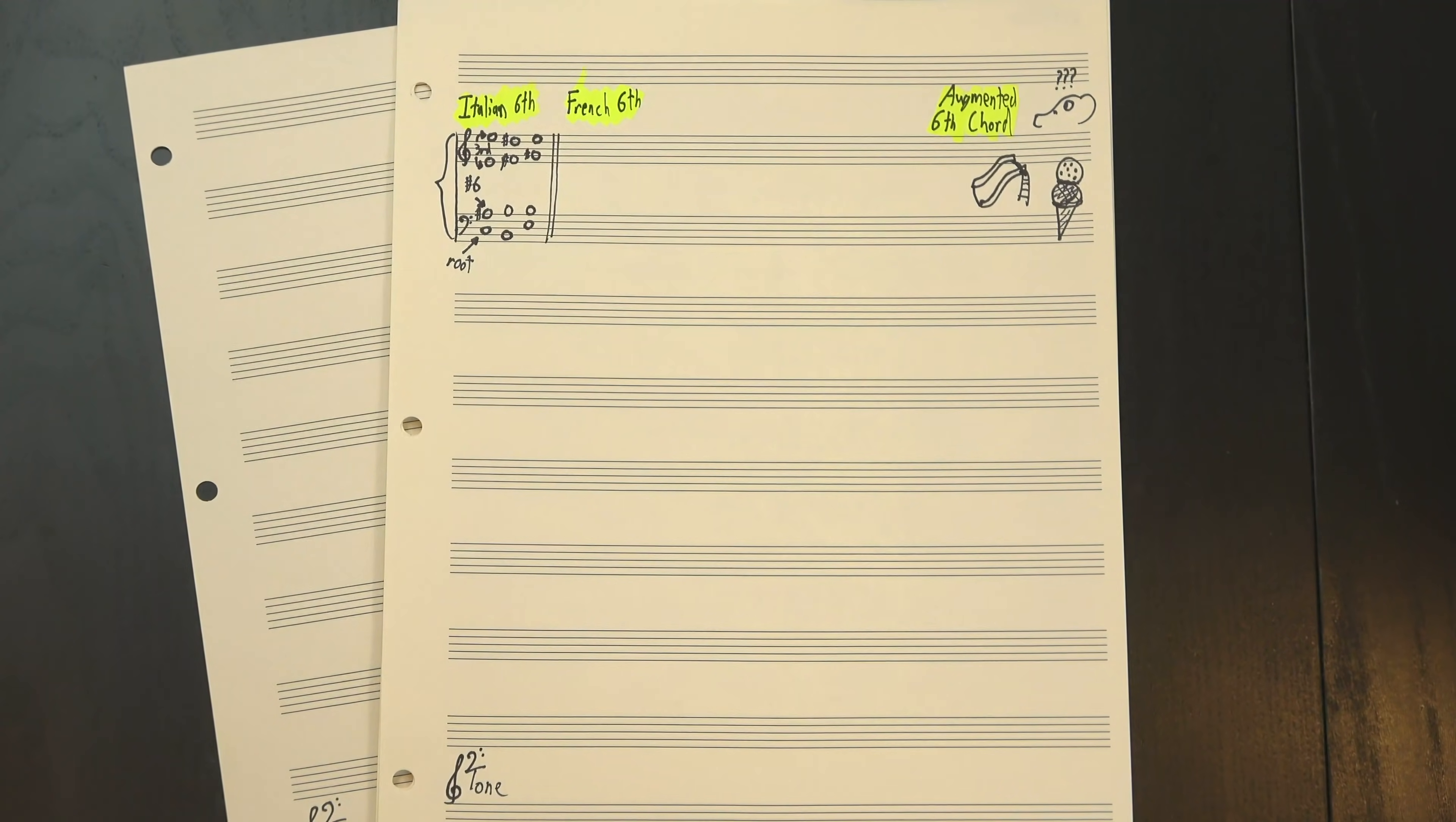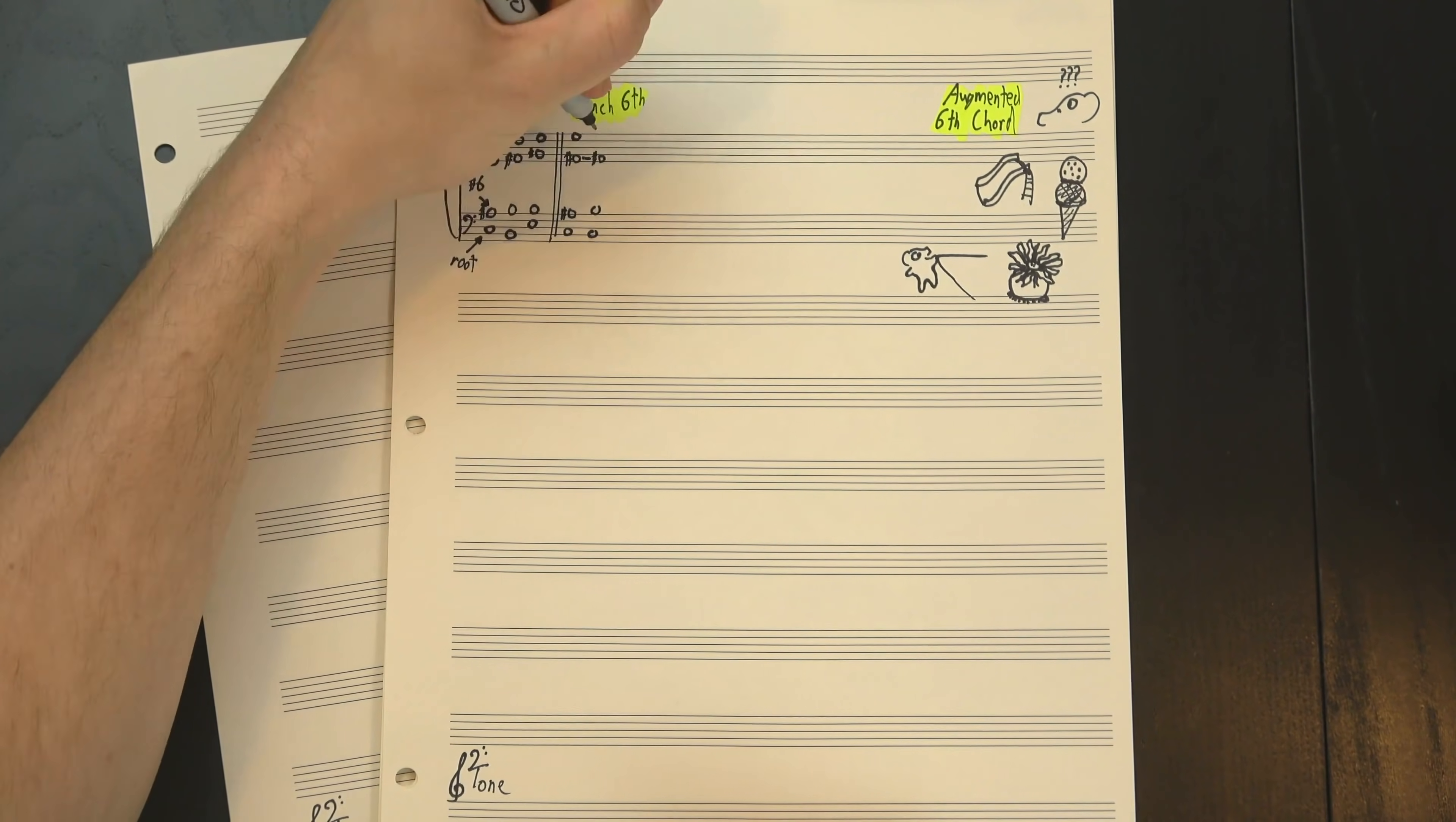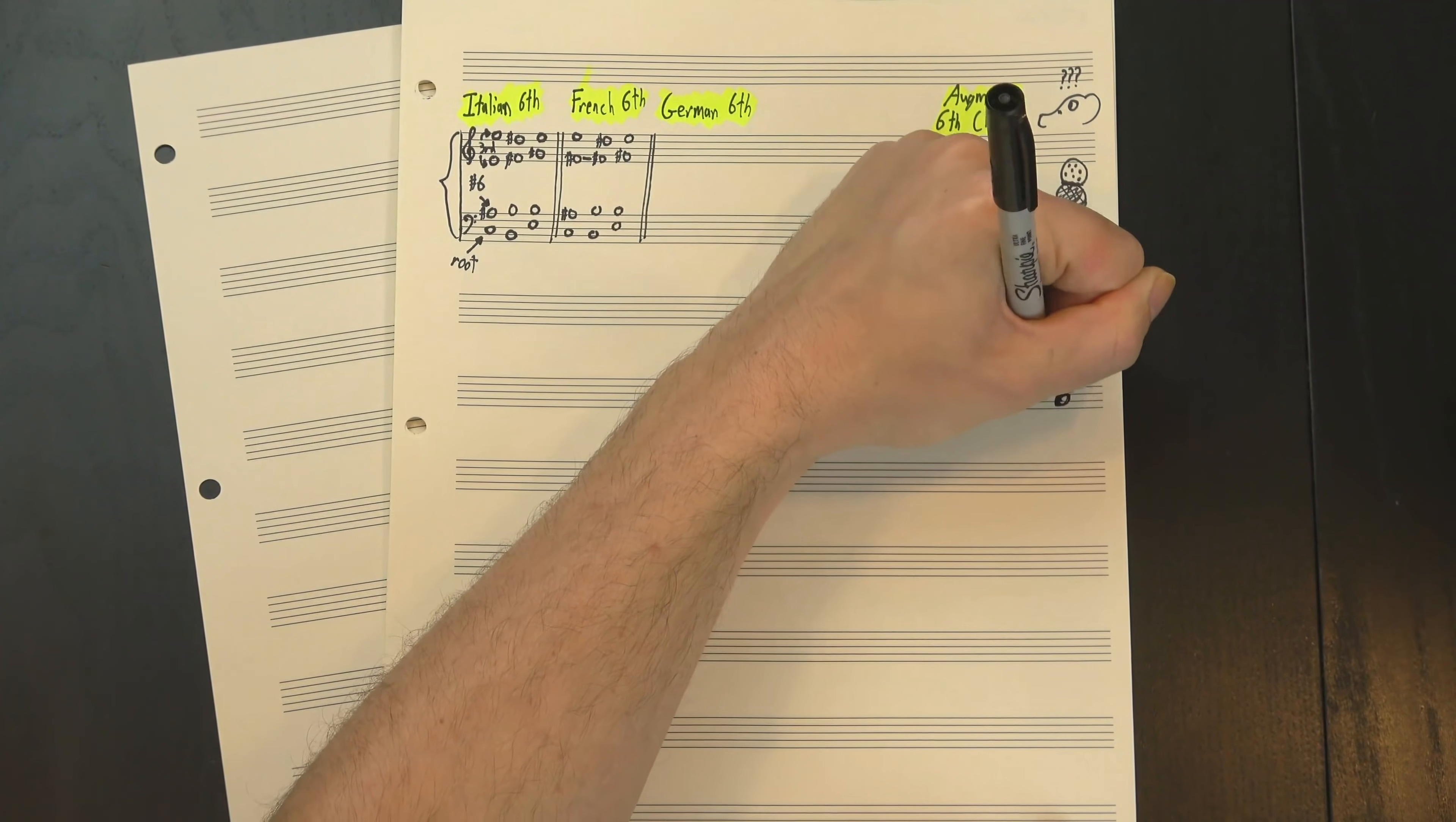There's a couple different flavors, based largely on how we solve the problem of approaching the fifth. The French sixth, for example, doesn't bother approaching it at all, it just starts on the target note and holds it through the resolution. The German sixth, meanwhile, says screw it, let's just do a parallel fifth.